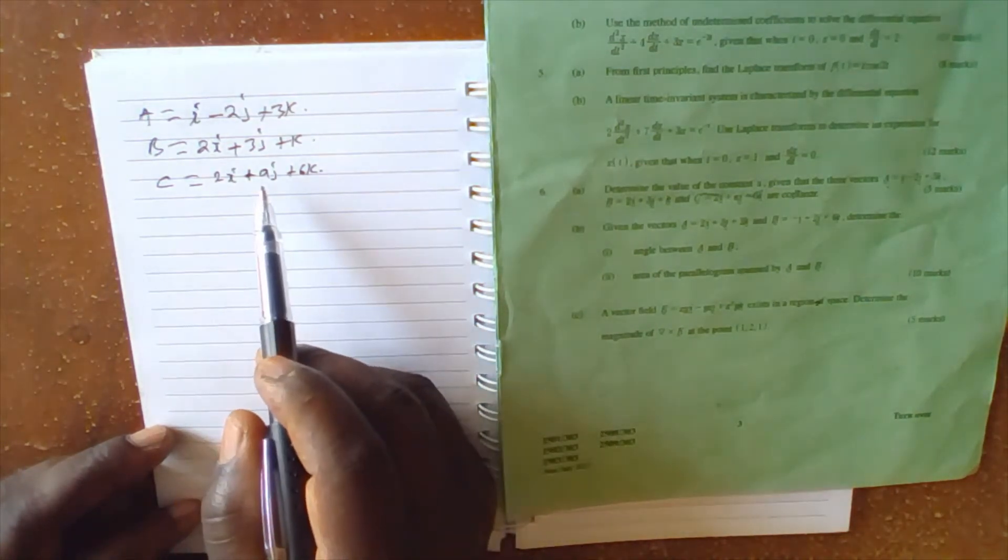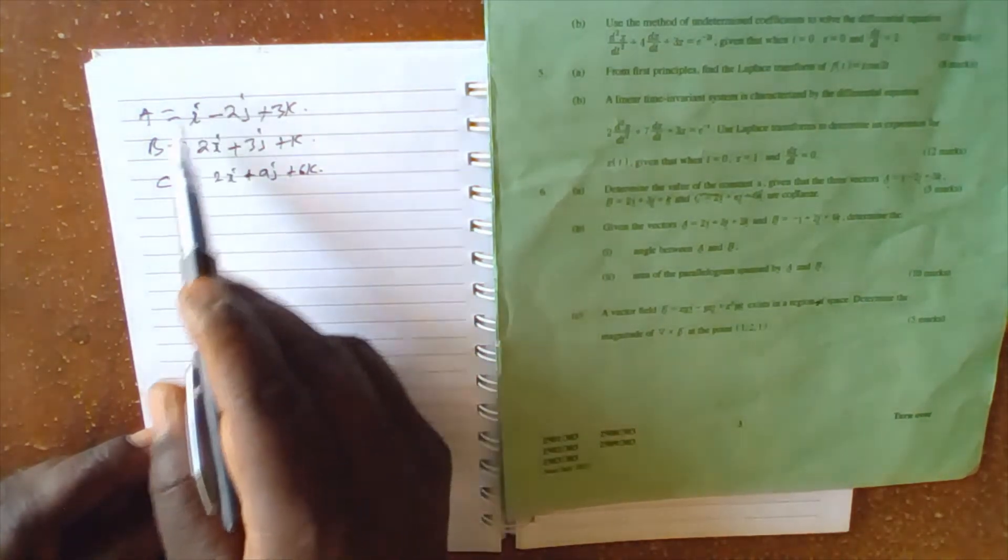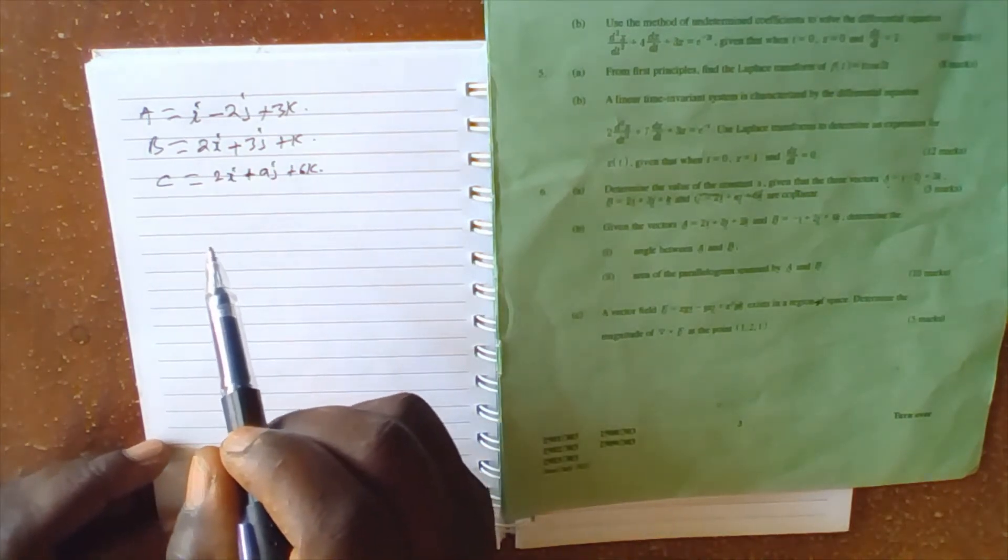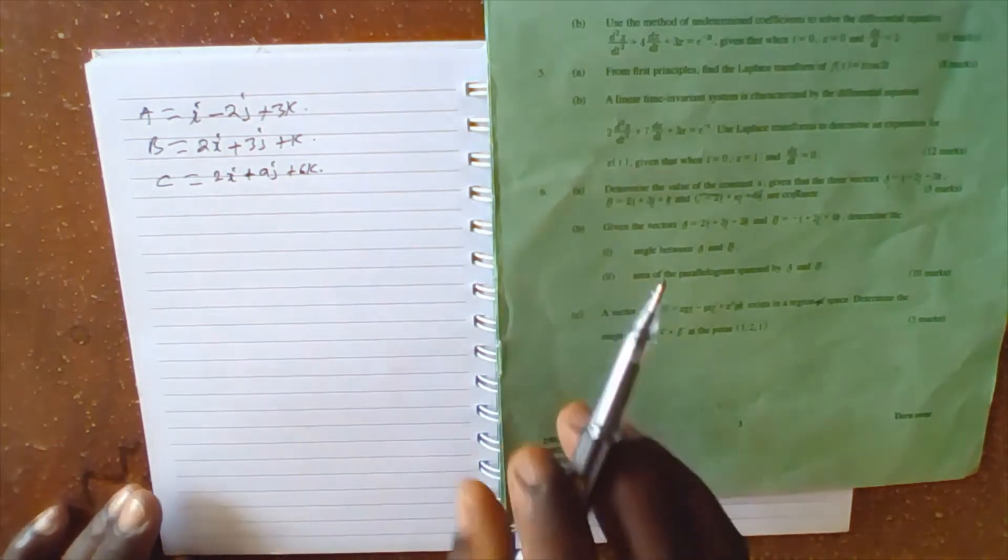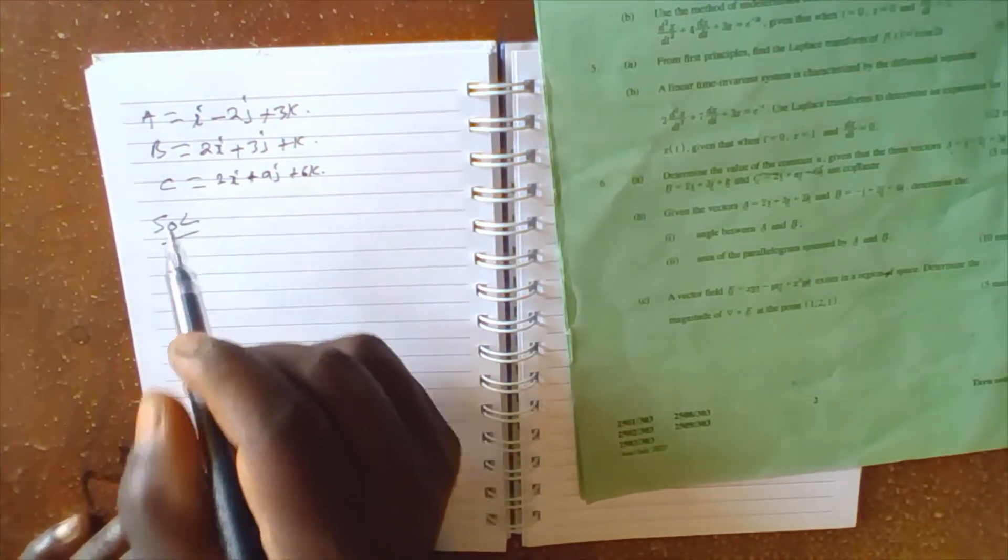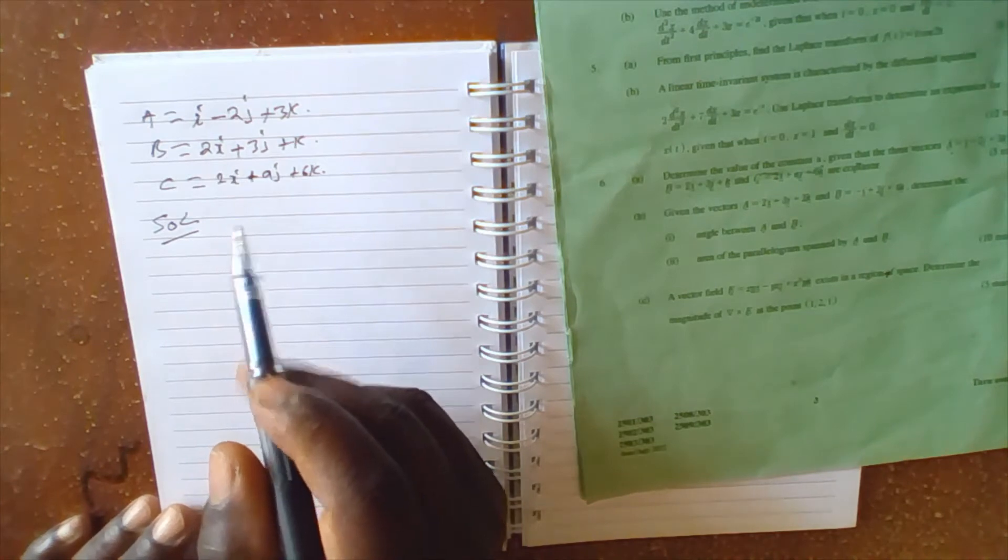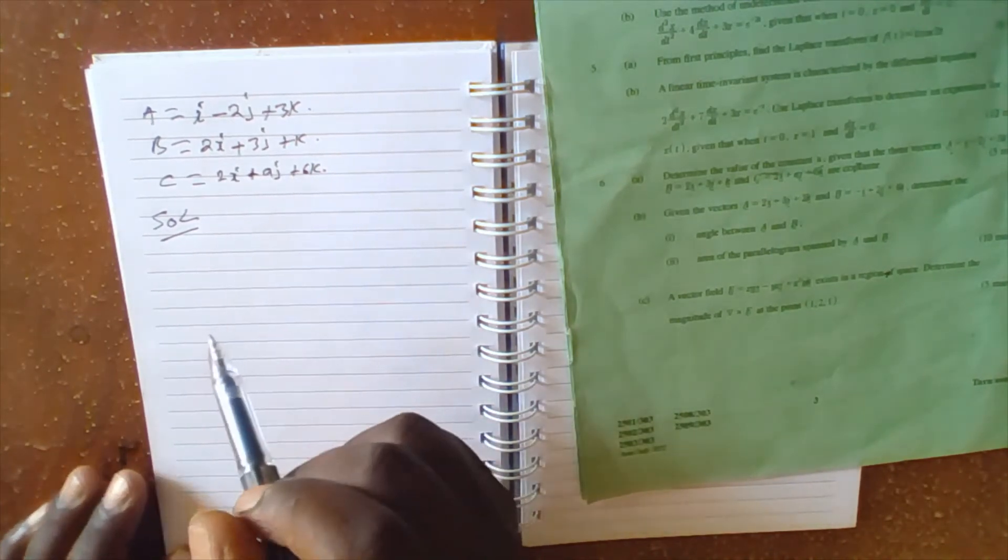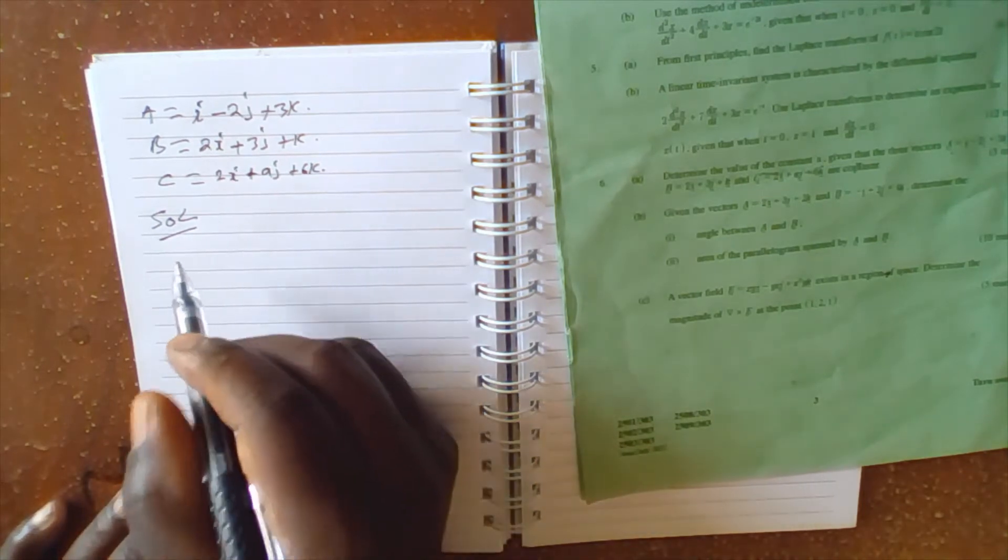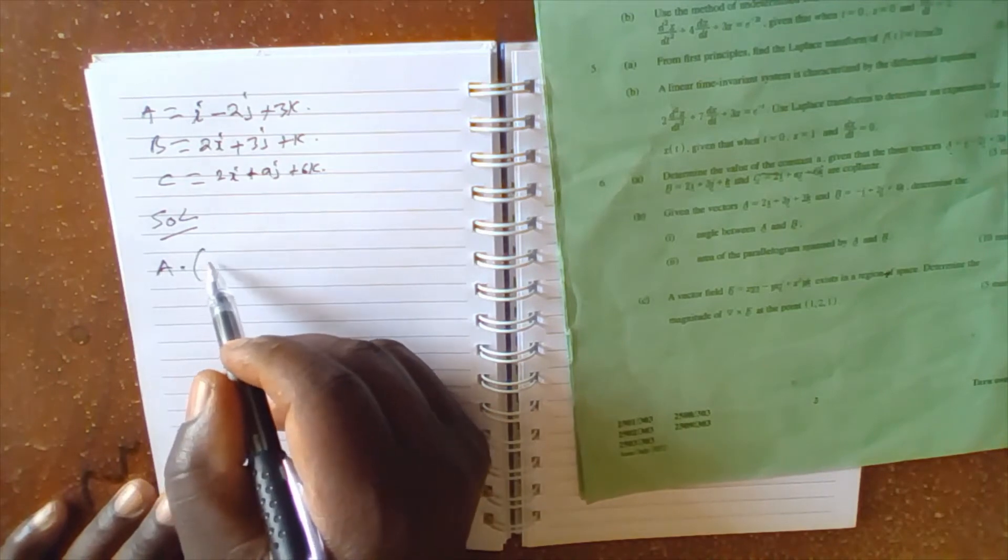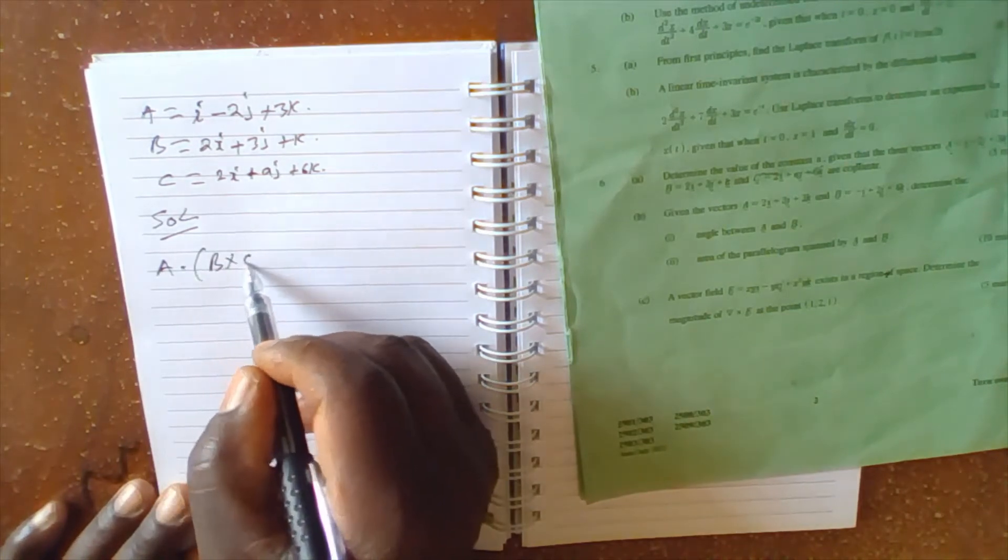So we want to find the value of A such that these three vectors are coplanar. Solution: If the three vectors are coplanar, then the determinant is equal to zero. So you can write this as A dot B cross C.